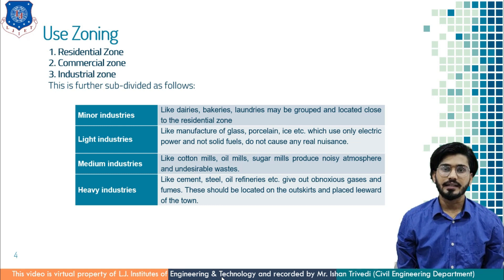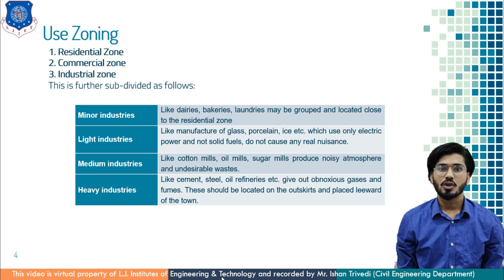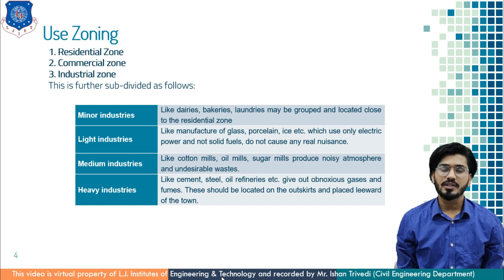Second is light industries, which includes glass, porcelain, ice, etc., which use only electric power and not solid fuels, and do not cause any real nuisance. Third is medium industries, like cotton mills, oil mills and sugar mills, which produce a noisy atmosphere and undesirable waste. The last is heavy industries, including cement, steel and oil refineries, which give out noxious gases and fluids. These should be located on the outskirts and placed in the leeward direction of the town.